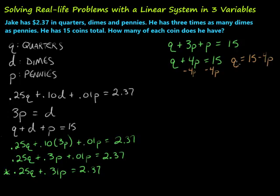So then we can take this because we know Q is equal to that and drop it into this equation and all we have then is the P's in our equation. So let's go ahead and do that. We have 0.25 times 15, and we've got to put it in parentheses here. Don't forget that. Minus 4P because we're replacing this where the Q was. So then plus 0.31P equals 2.37.